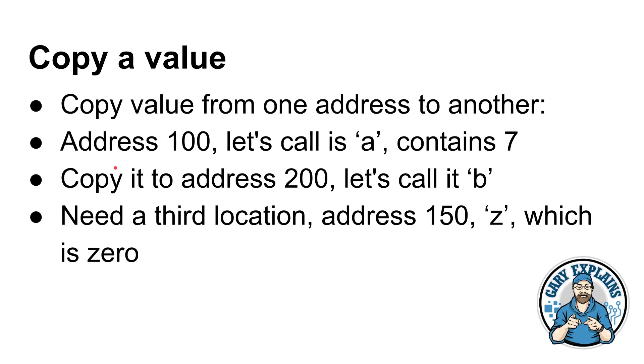For example, if we wanted to copy a value, let's say we had a value in one address, address 100, and it had a seven in there. Let's call it A for easiness, so we don't have to keep saying address 100. So in A, which is at address 100, there is the number seven, and we want to copy it to address 200, let's call it B. And we're going to have a third location, address 150, which we're going to call Z, which is always zero.